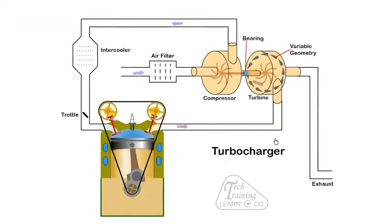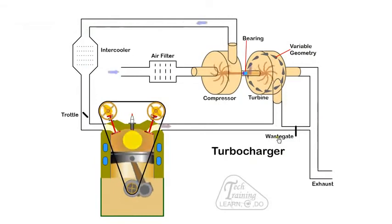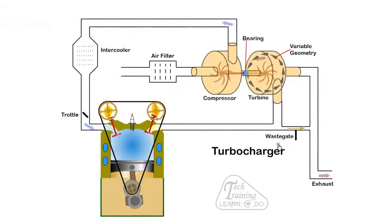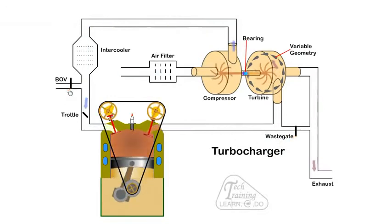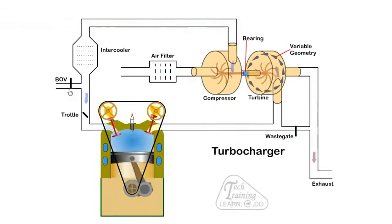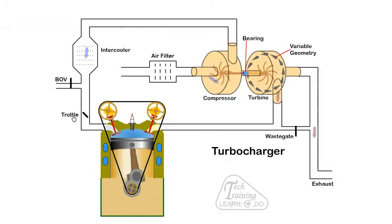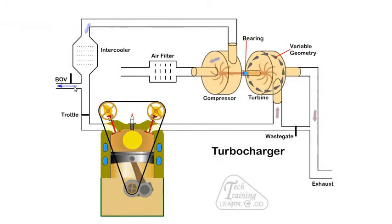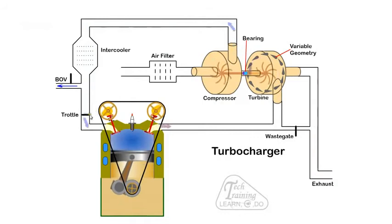Other ancillary equipment include a wastegate. It is used to bypass some of the exhaust gas from the turbine when it is not required. A BOV, blow off valve or dump valve is used to vent pressurized air to atmosphere when the throttle valve is closed, thus preventing damage to the compressor. It tends to make a whoosh sound when it activates.